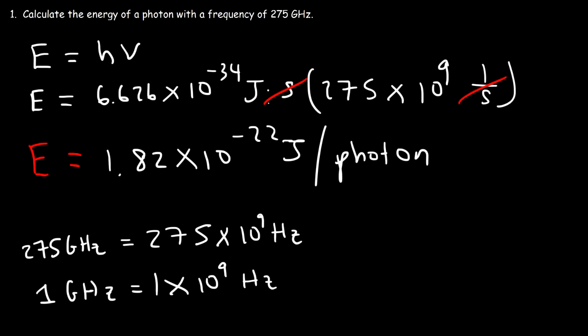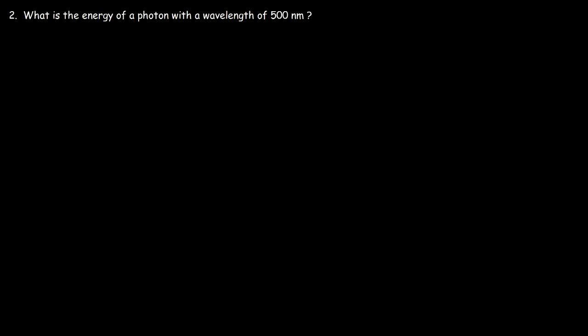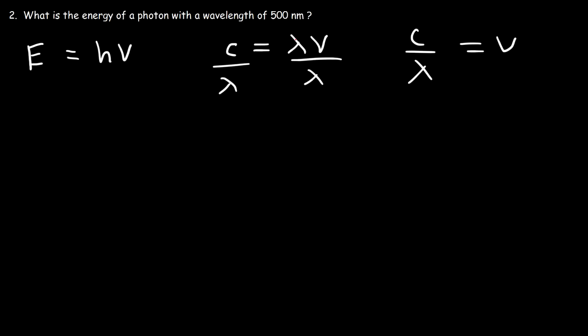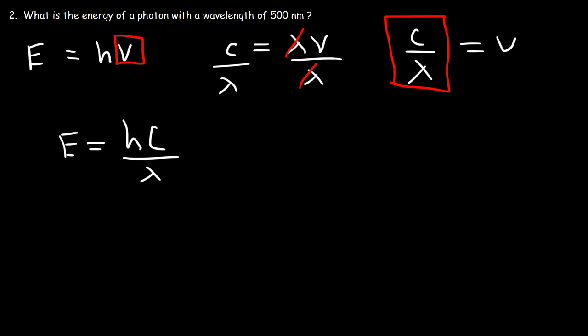Now let's move on to number two. How can we calculate the energy of a photon if we're given the wavelength in nanometers? There are two equations we need to use: E equals Planck's constant times frequency, and the speed of light equals wavelength times frequency. Solving for frequency gives us the speed of light divided by the wavelength. Substituting, the energy of a photon equals Planck's constant times the speed of light divided by the wavelength.